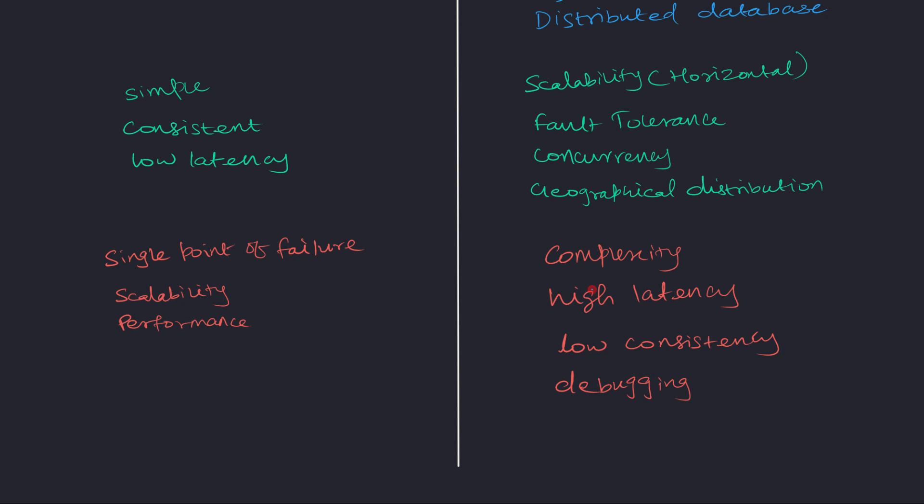And on the distributed system side, when we talk about disadvantages, distributed systems are usually high in complexity. So they are very complex to design and develop. And they also experience high latency. Because we have multiple nodes, and each of those nodes need to communicate with each other somehow, it is going to introduce some network related latency. And consistency is going to be low, because we have multiple nodes, and the data and states need to be synchronized between those nodes somehow. And that synchronization is usually asynchronous or eventual, we might experience low consistency.